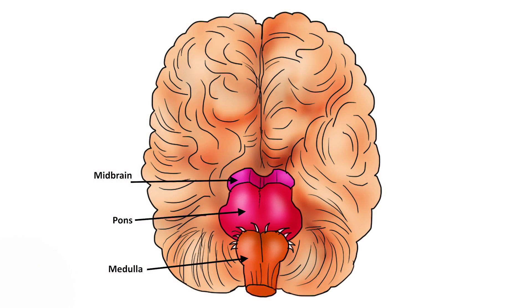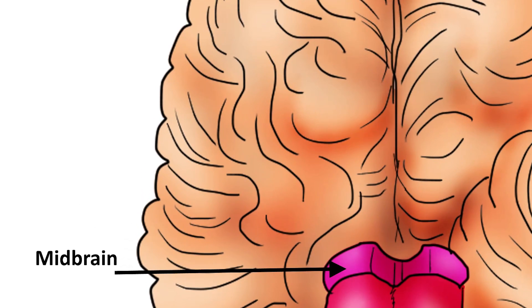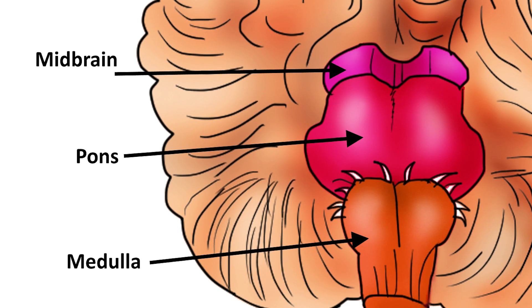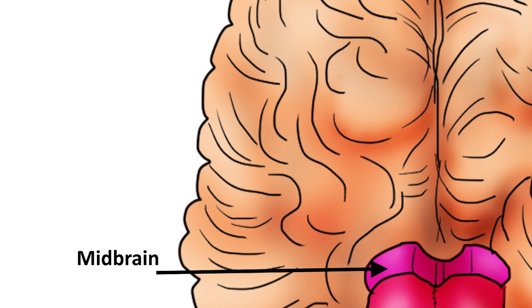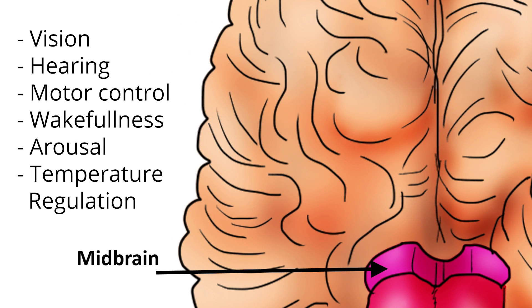The brainstem is divided into three parts: the midbrain, the pons, and the medulla. The midbrain is associated with vision, hearing, motor control, wakefulness, arousal, and temperature regulation.